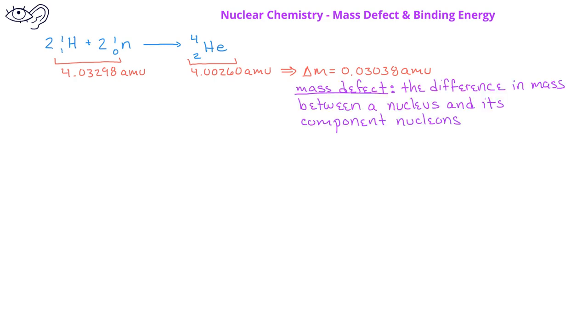When we compare the mass of two protons and two neutrons to the mass of a helium-4 nucleus, we see that there is a difference in mass of 0.03038 AMU. This difference in mass is called the mass defect, which is the change in mass between a nucleus and its component nucleons.